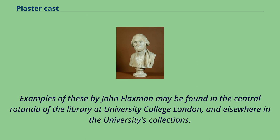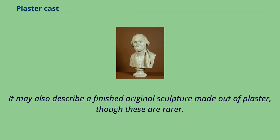Examples of these by John Flaxman may be found in the central rotunda of the library at University College London, and elsewhere in the university's collections. It may also describe a finished original sculpture made out of plaster, though these are rarer.